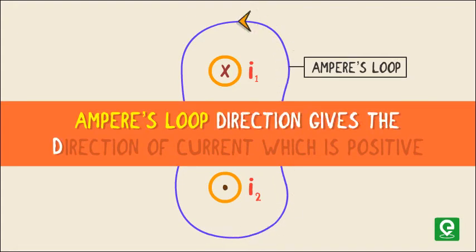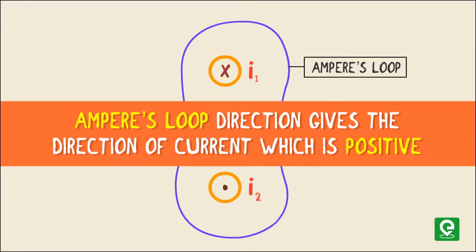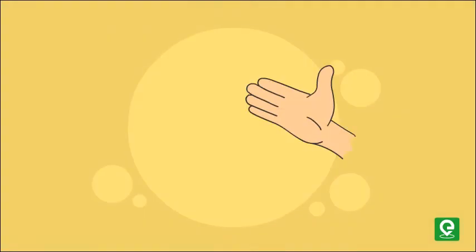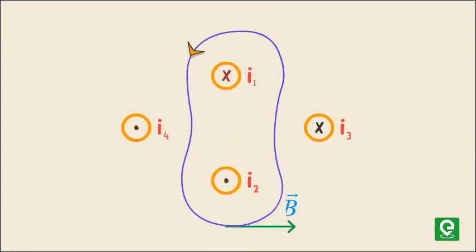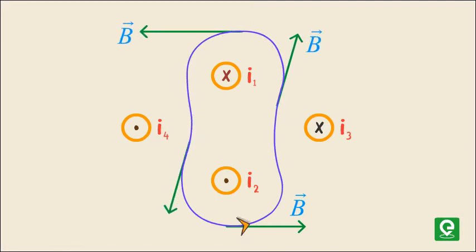Ampere's loop direction gives the direction of current which is positive. Curl the fingers of your right hand in the direction of Ampere's loop, then the direction of the thumb will give the direction of positive current. The magnetic field at all points along this loop will be the same and will be tangential to the circle, which is also the direction of the length element dl.